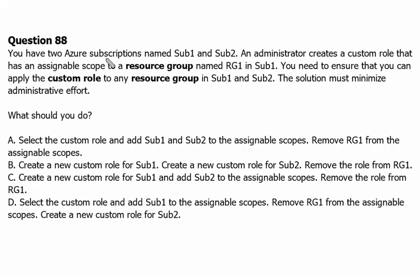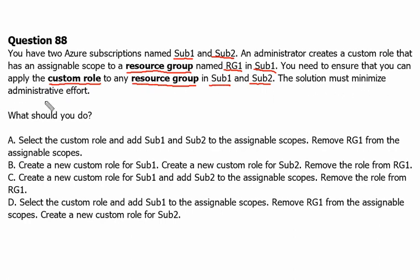You have two Azure subscriptions named Sub1 and Sub2. An administrator creates a custom role that has an assignable scope to resource group named RG1 in subscription 1. You need to ensure that you can apply the custom role to any resource group in subscription 1 and subscription 2. The solution must minimize administrative efforts. What should you do?